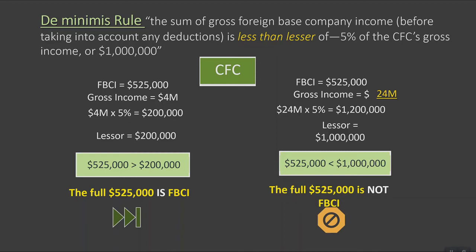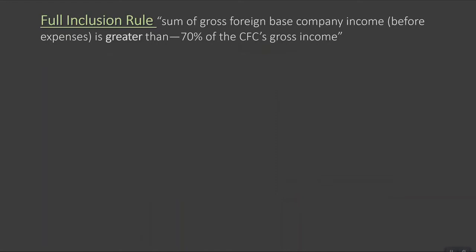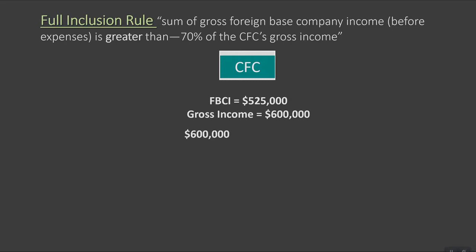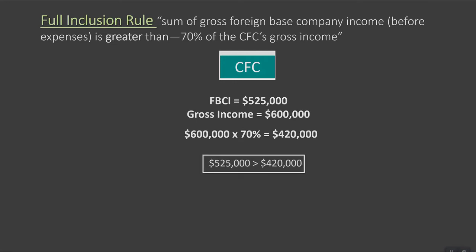If, like scenario one, the amount exceeds the de minimis amount, we then look to the Full Inclusion Rule, which says that if the sum of the gross foreign-based company income, before expenses, and the gross insurance income for the taxable year is greater than 70% of the CFC's gross income, then all gross income earned by that CFC for the year is deemed subpart F. For example, if a CFC has foreign-based company income of $525,000 and gross income of $600,000, then $600,000 times 70% equals $420,000. Since $525,000 is more than $420,000, the full $600,000 earned by the CFC in this example will be considered foreign-based company income, not just the $525,000 that was identified.